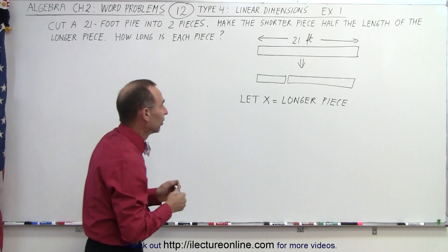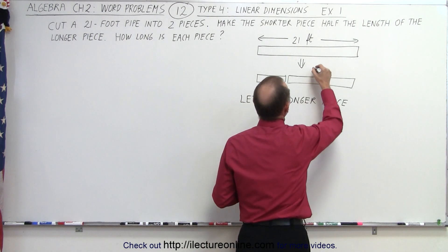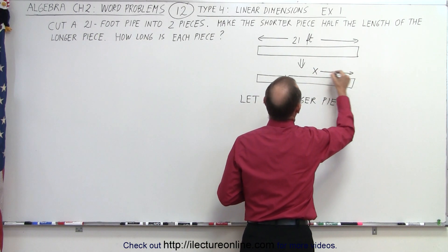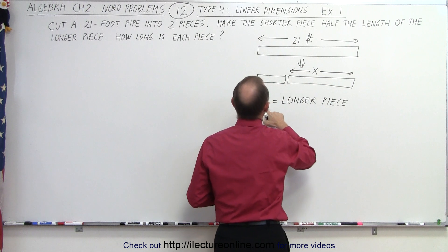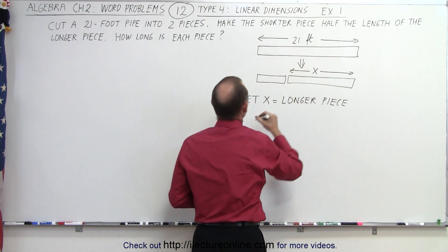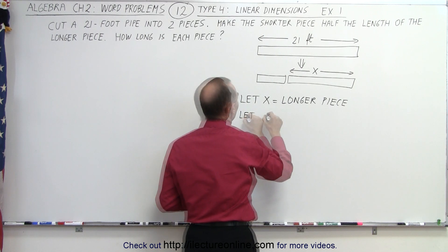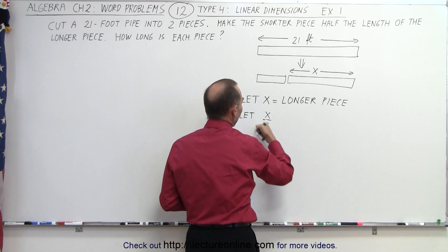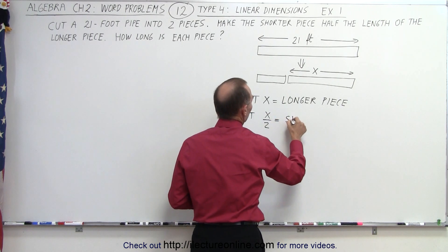So that means the length of the longer piece is equal to x. So how do we express the shorter piece? Well, the shorter piece is half the length of the longer piece. So let x divided by 2, which is half, equal the shorter piece.